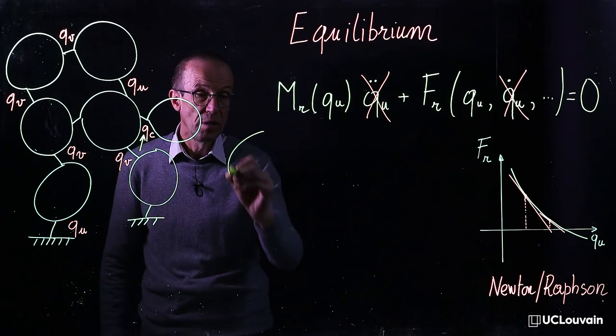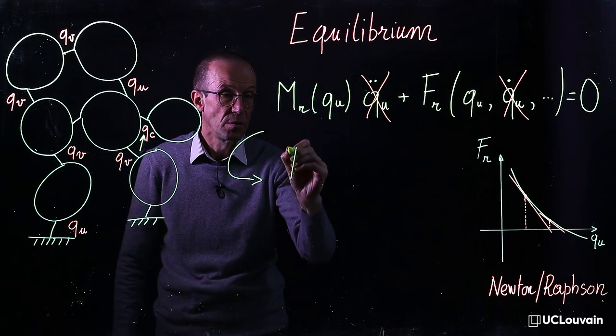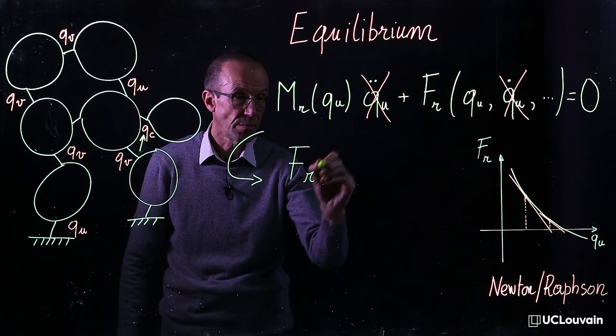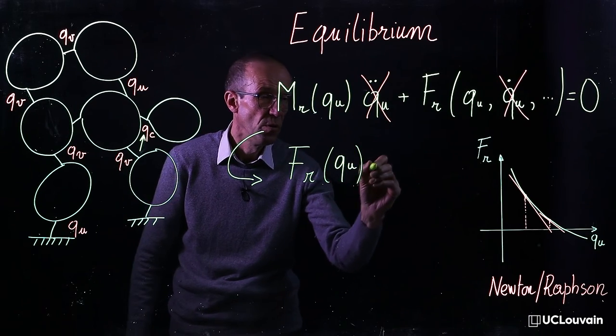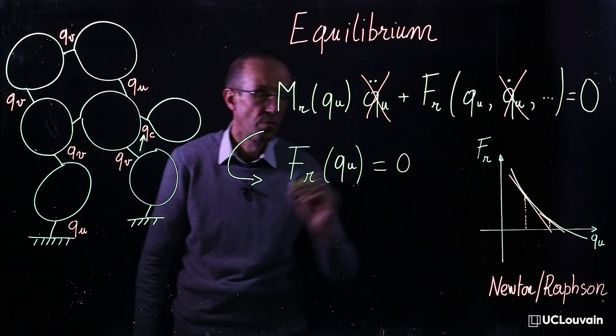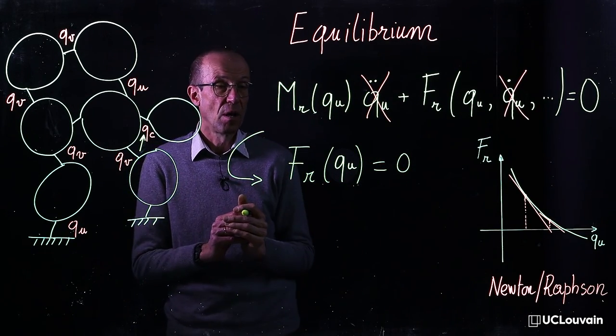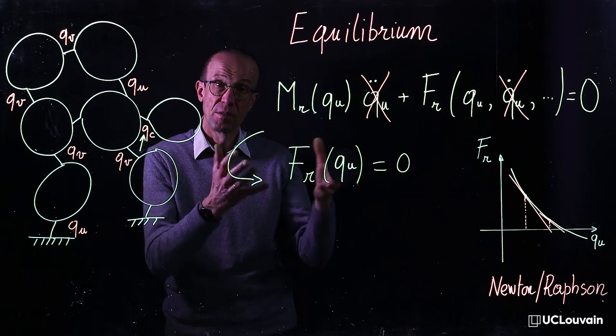In this case, of course, the equation simply becomes Fr of q is equal to 0, which represents a nonlinear algebraic system.